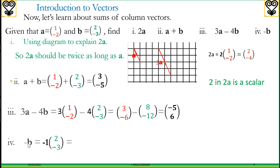Negative b means negative 1 times the component of b. Negative 1 is the scalar, and that will give us negative 2 and 3.